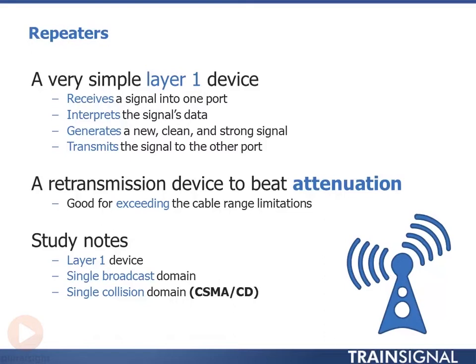A repeater does a retransmission to beat attenuation and extends cable range limitations, so you can go as far as you want as long as you have enough repeaters. There are really three things to know about a repeater: it's a layer one device, it doesn't do anything to the data — it doesn't read or understand the data, it just cleans up the signal and puts the same zero or one out the other end — and it's a single broadcast domain, meaning if you send a broadcast on one side it comes out the other side with no separation.